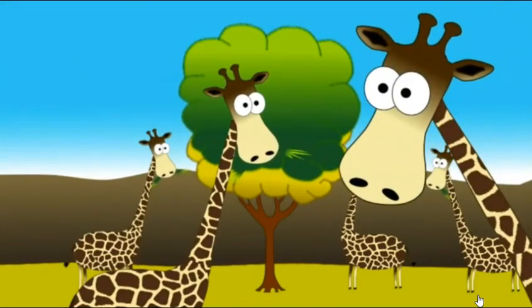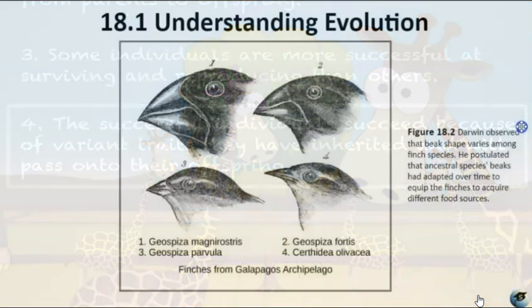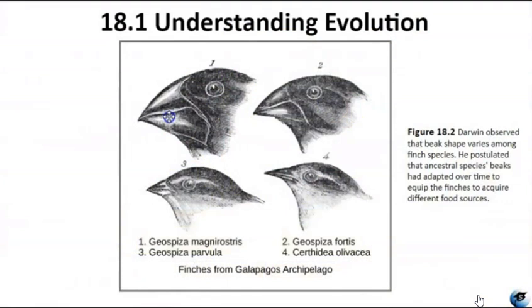In other words, natural selection is an important process, though not the only process, by which evolution takes place within a population of organisms. Darwin observed that the beak shape in finches was different based on what the finches ate. He postulated that the ancestral species' beak had adapted over time to equip the finches to acquire different types of food.